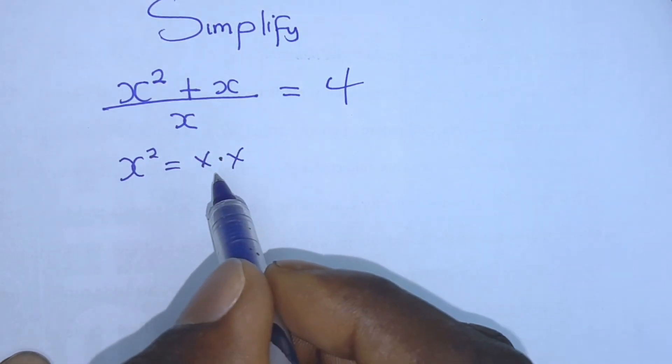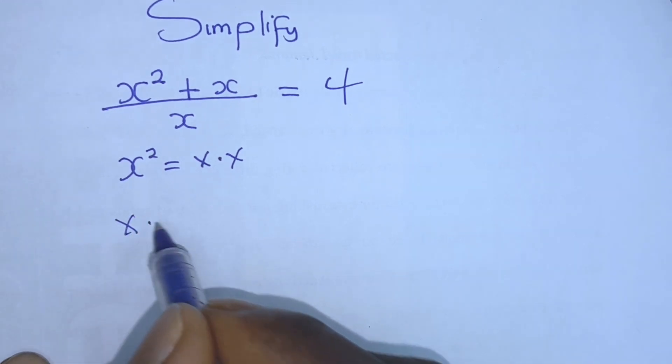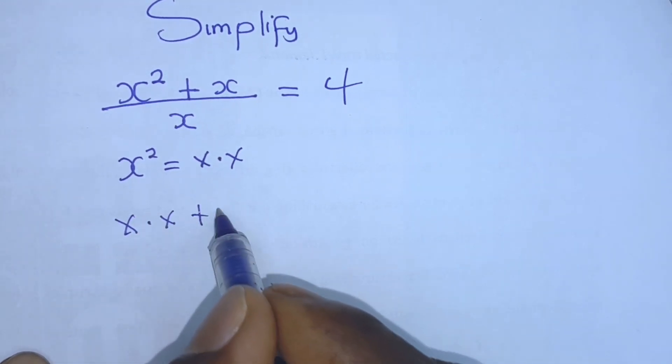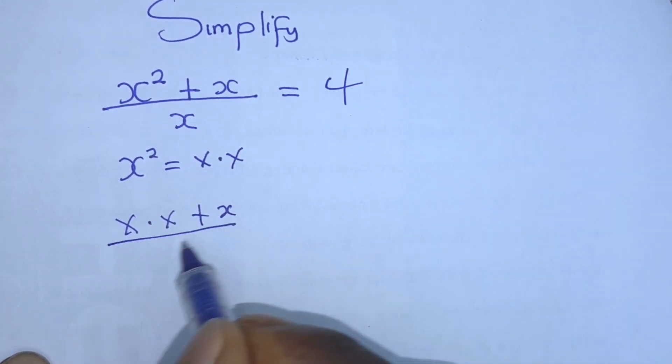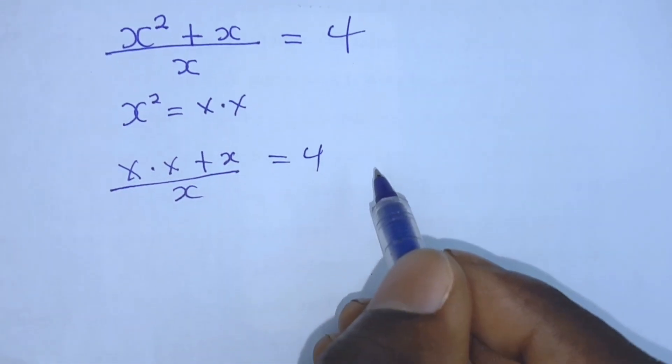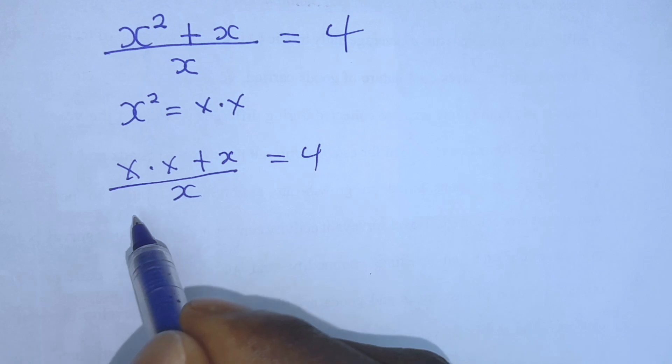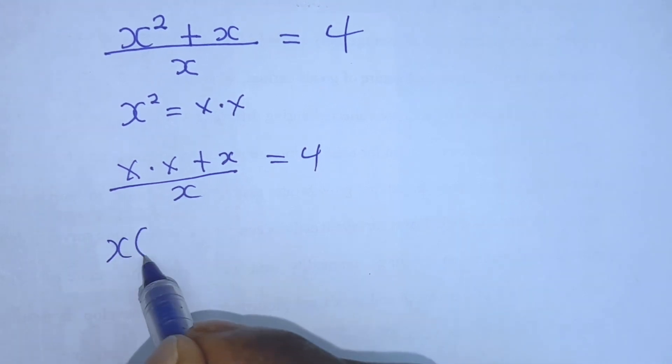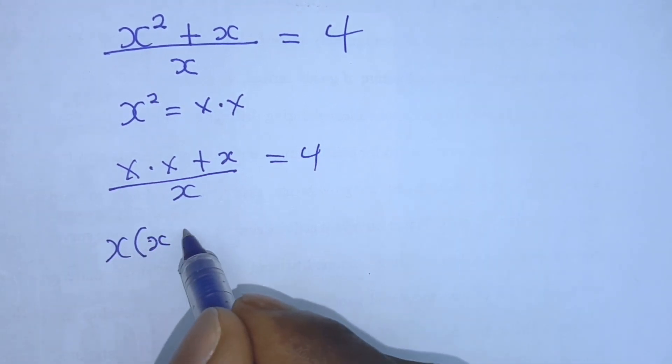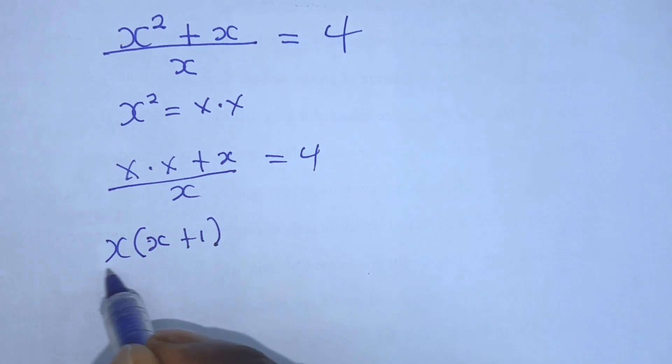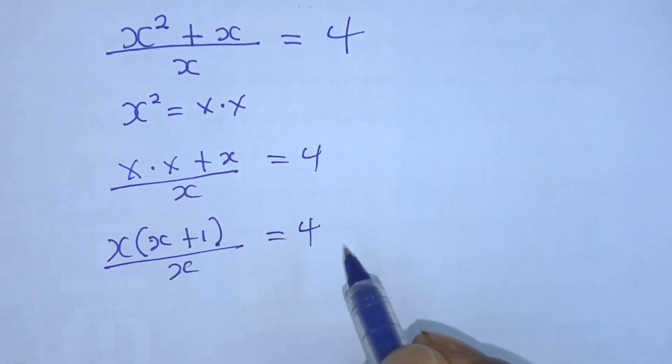So if that is the case, x times x plus x all over x is equal to 4. We have x in common here. We can factor x outside. x open bracket x plus 1 closed bracket all over x, which is equal to 4.